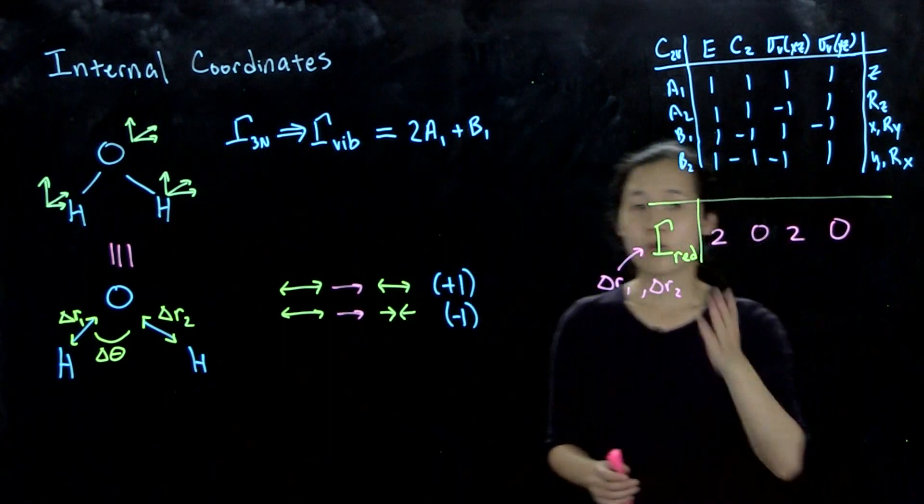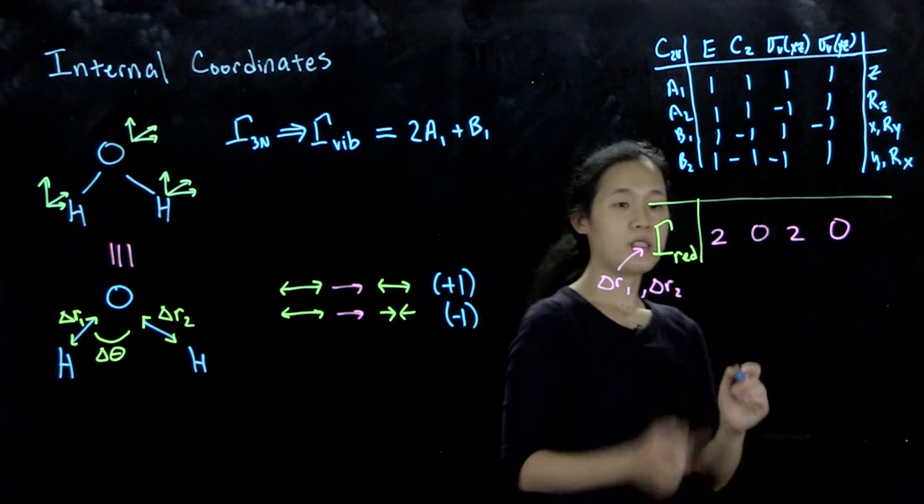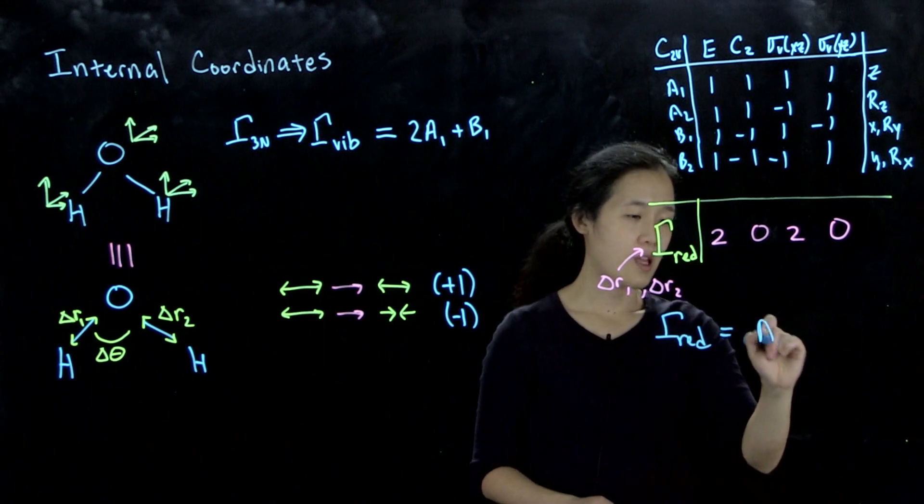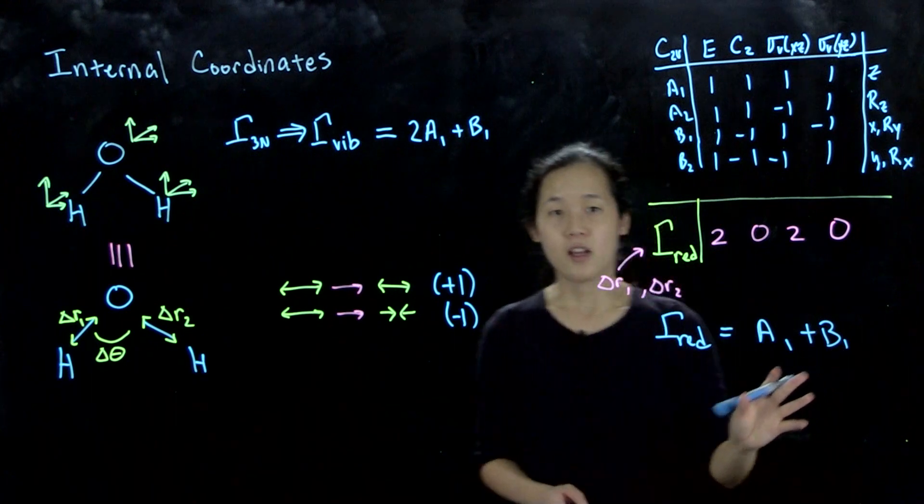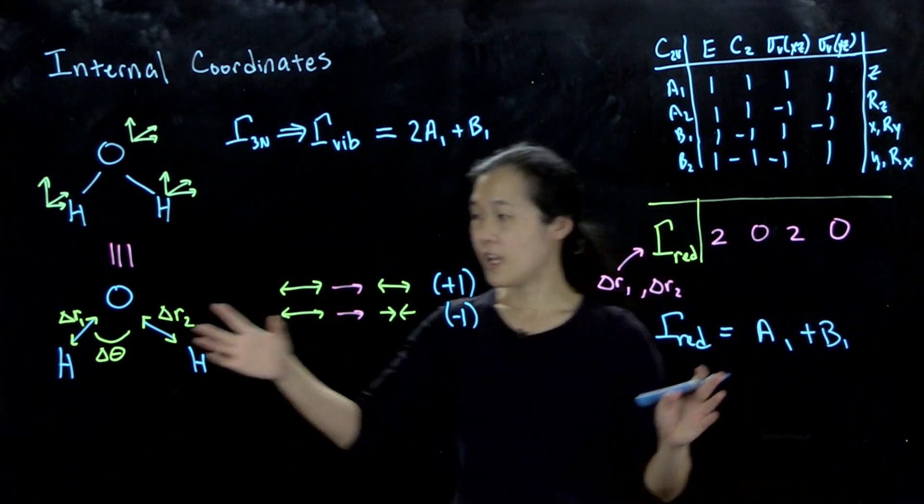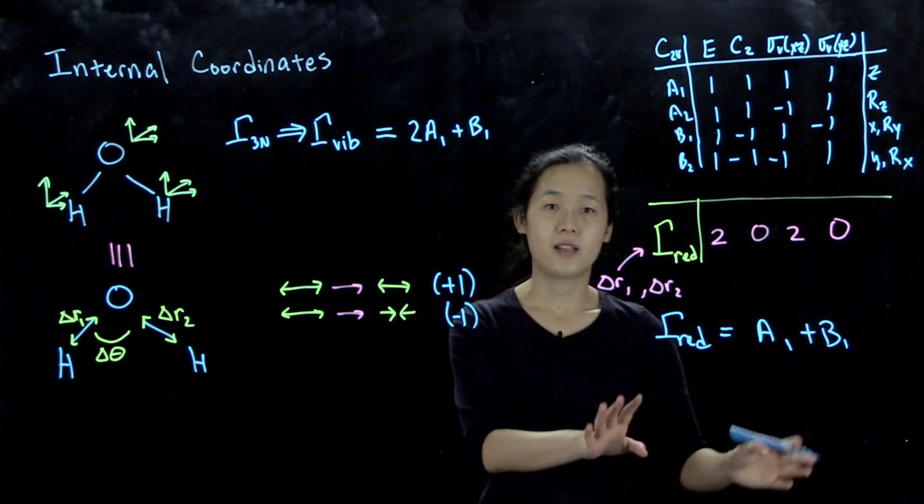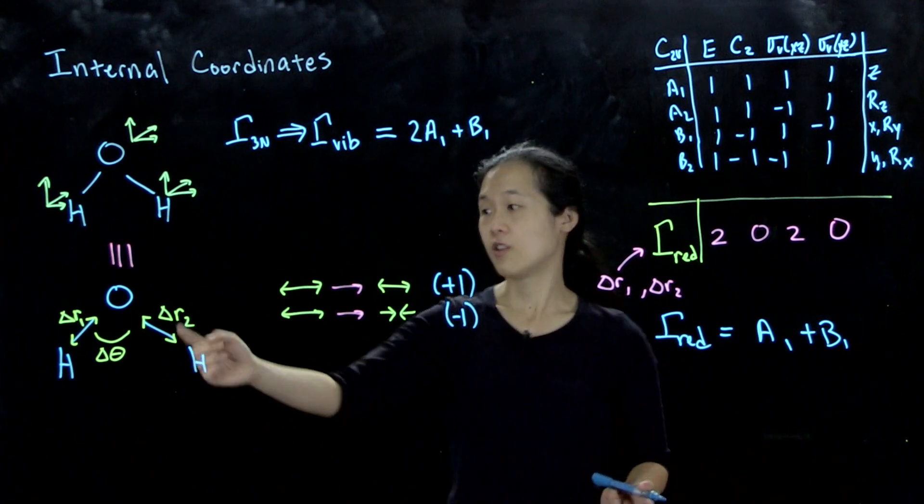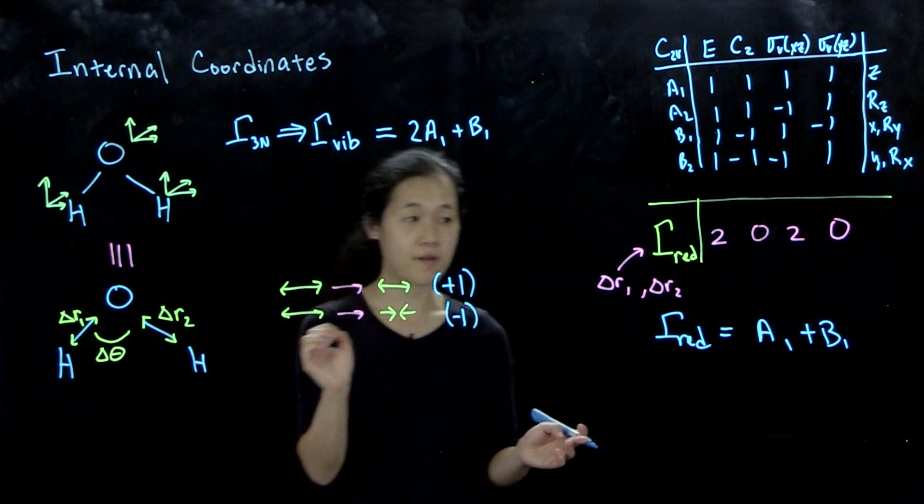If we then reduce it down, which I'll leave you to do, this means that gamma_red is going to be equal to A1 plus B1. So we're saying that there's an A1 stretching mode and a B1 stretching mode, and we should be able to use these to visualize how the molecule stretches along the OH bonds.